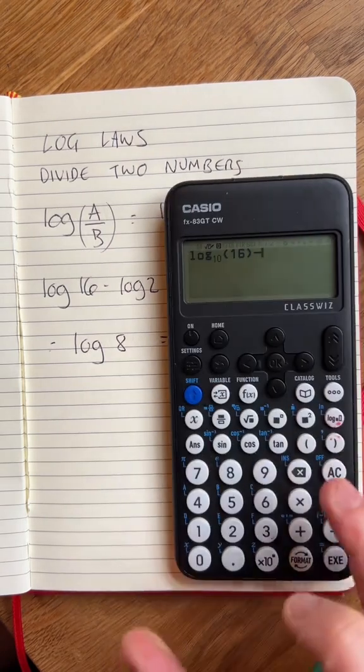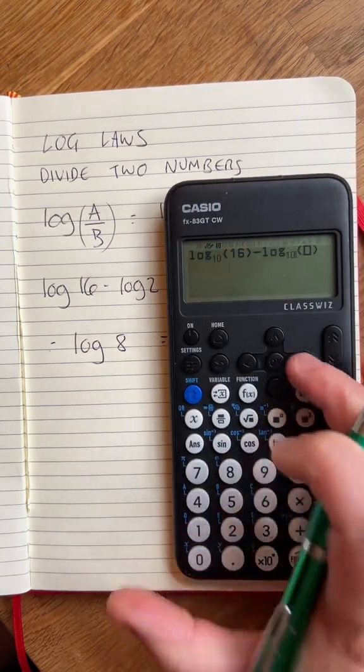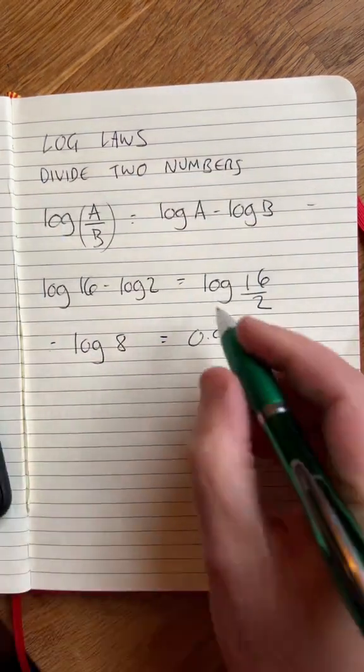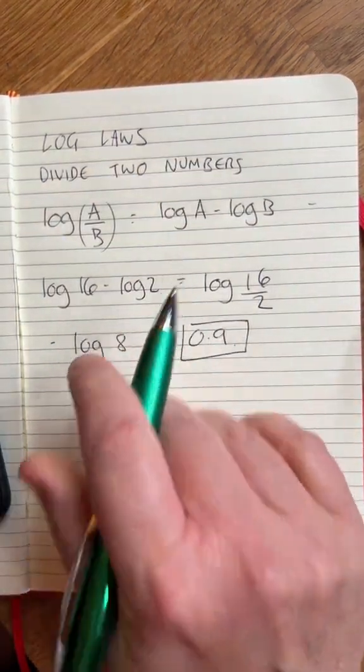Log base 10 of 16 minus log base 10 of 2 equals 0.9. Same answer, we've just simplified it. Another log law over now.